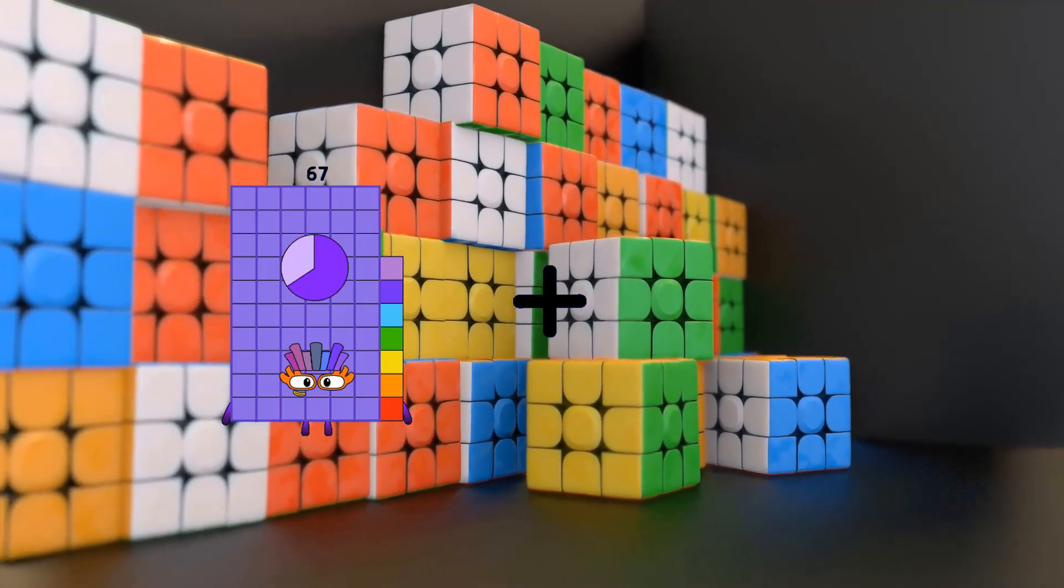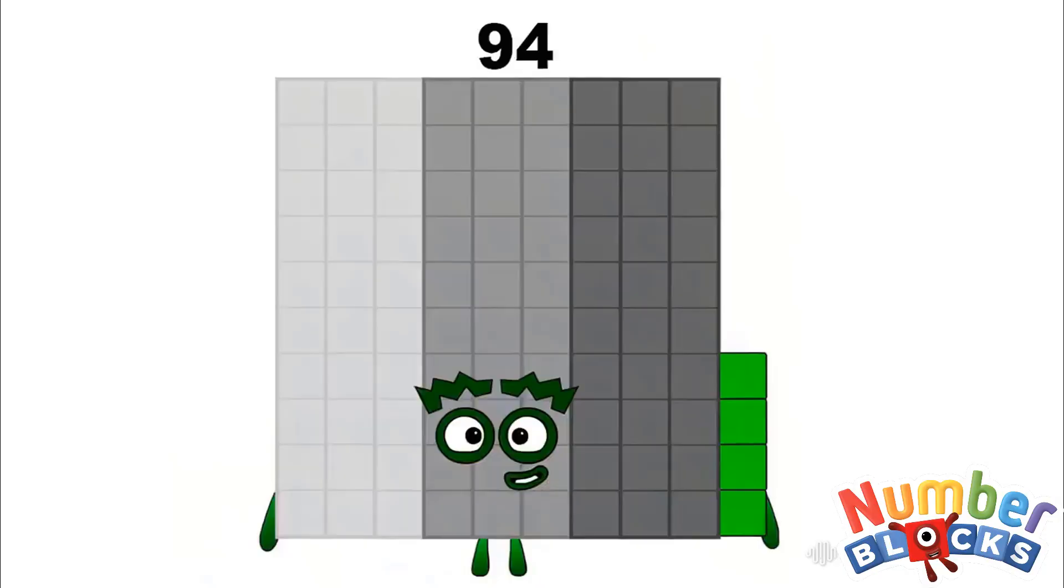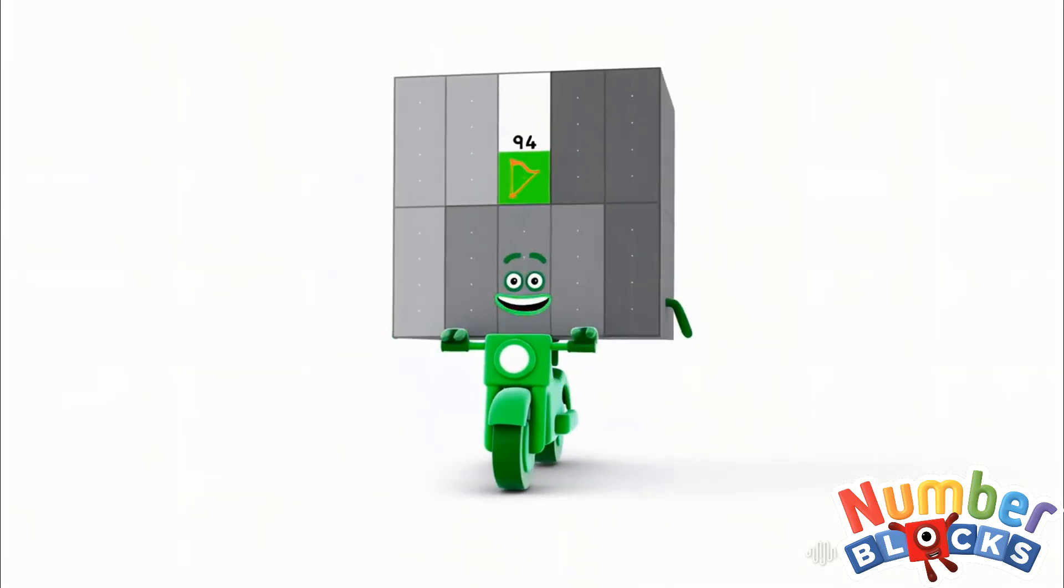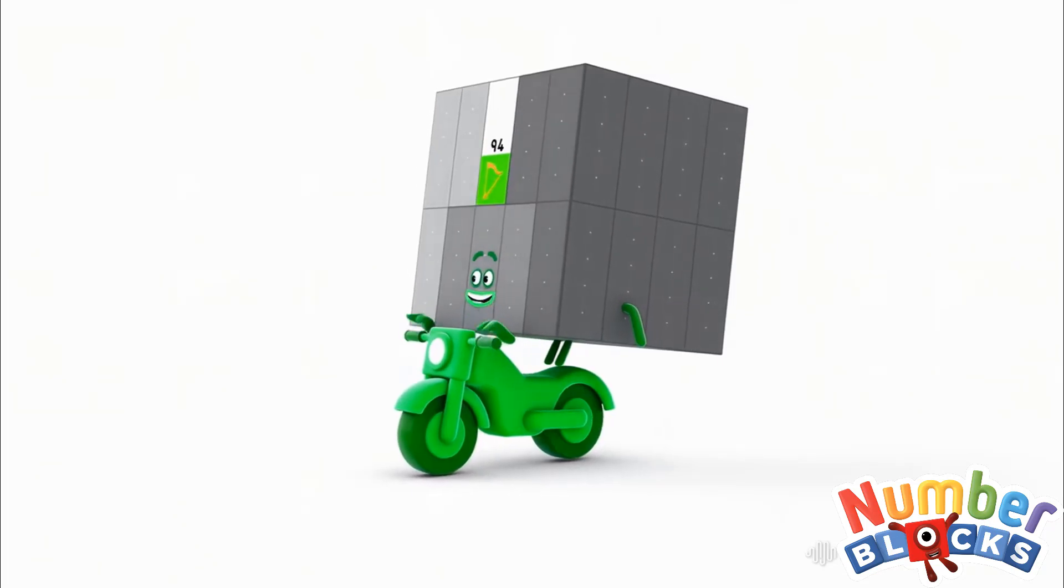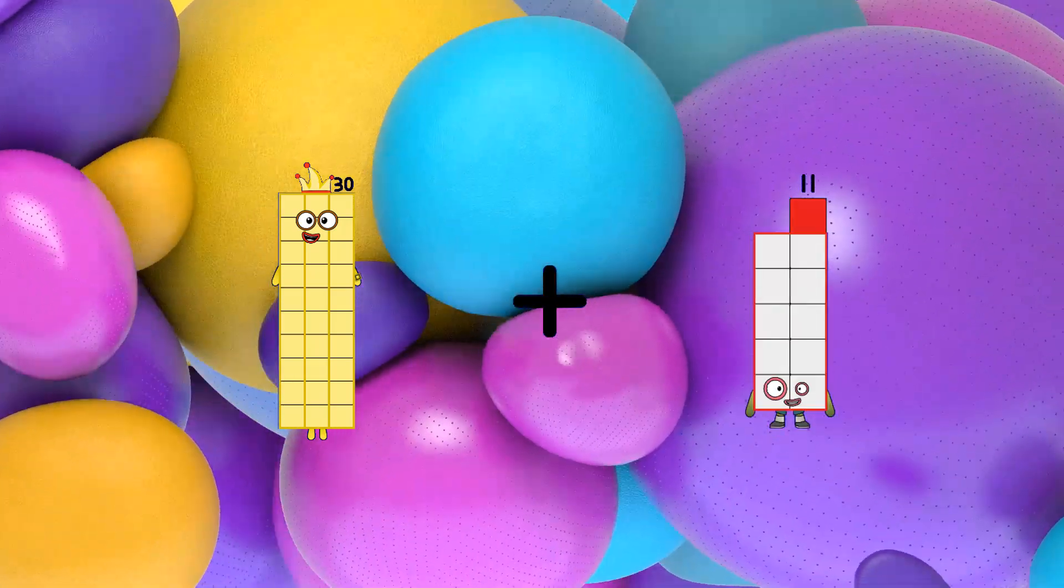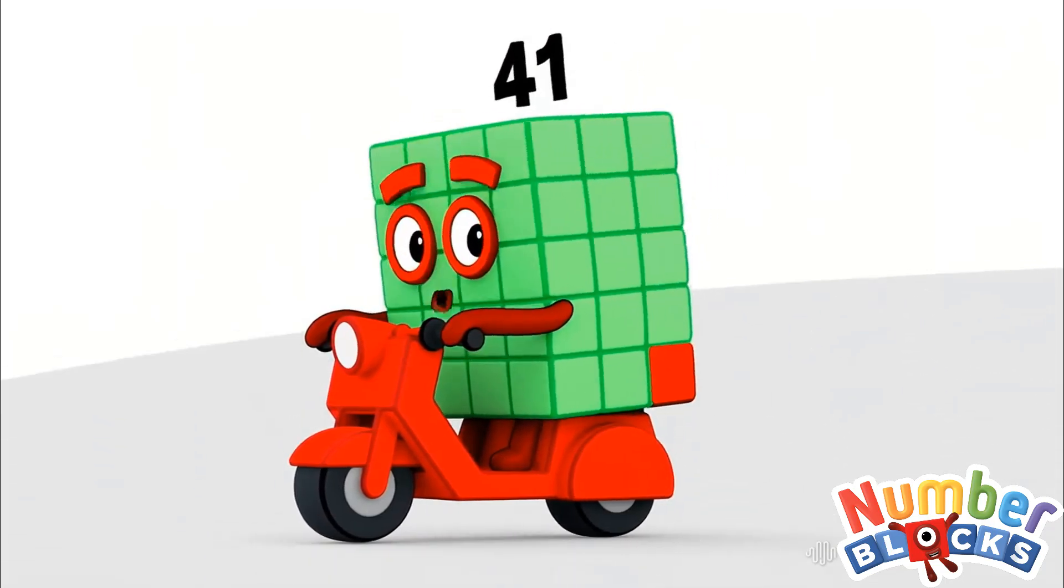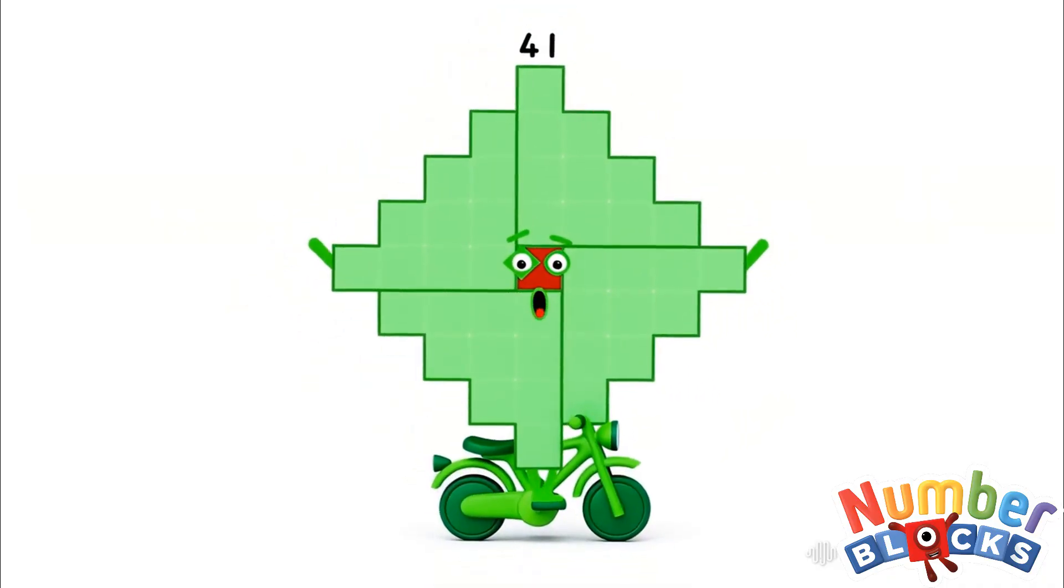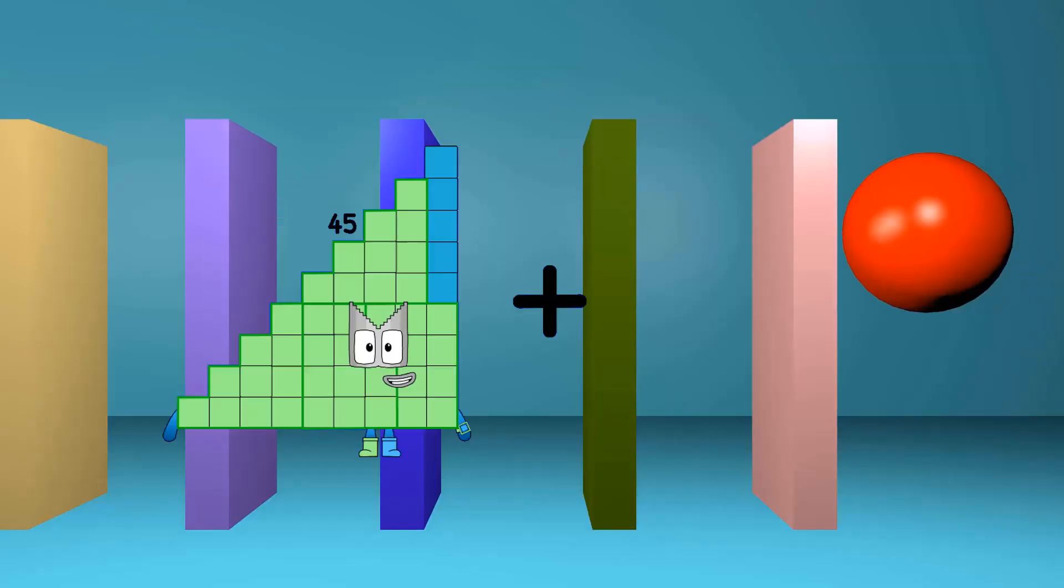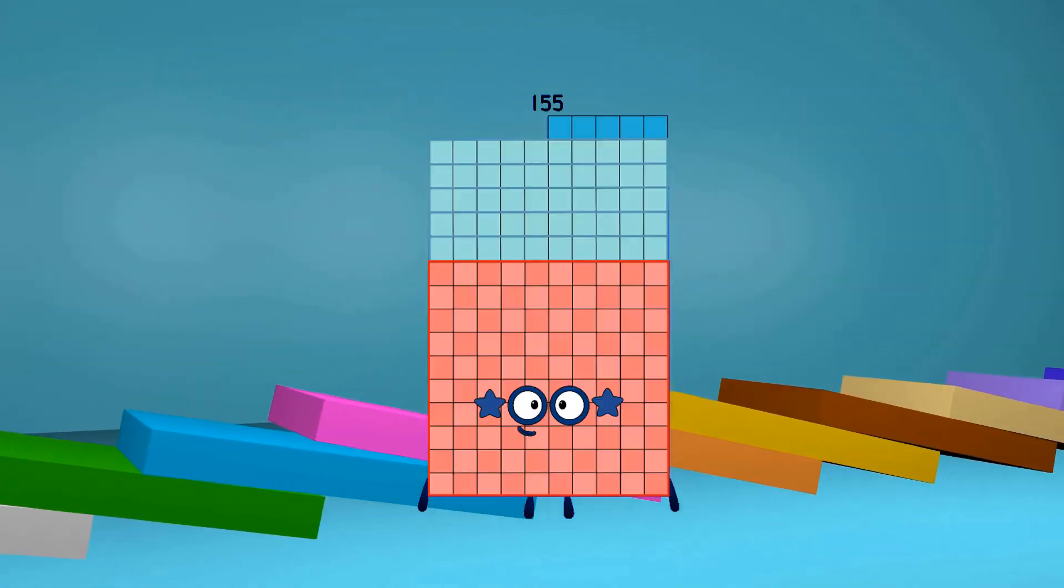67 plus 27 equals 94. 30 plus 11, 67 equals 41. 67 plus 88 equals 155.